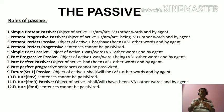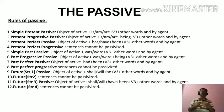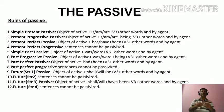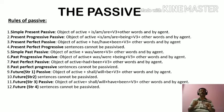Future structure two sentences cannot be passivized. Now the last one: the object of active plus shall or will plus have plus been plus V3 plus other words and by agent. And future structure four sentences cannot be passivized.